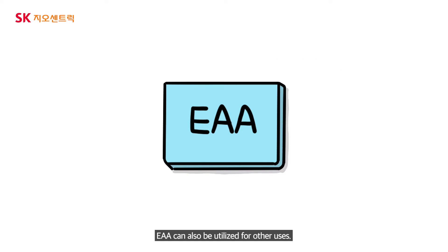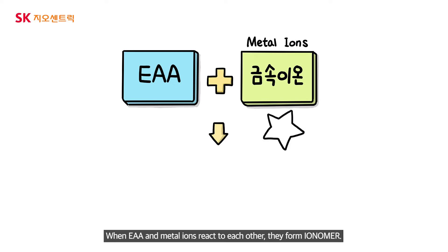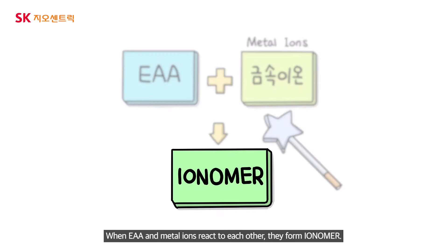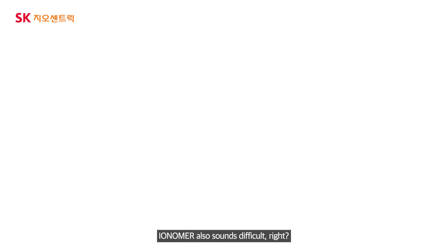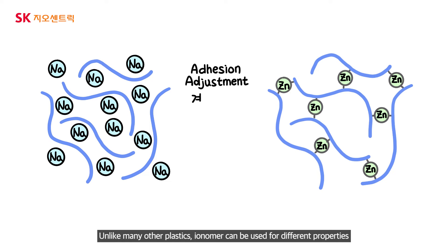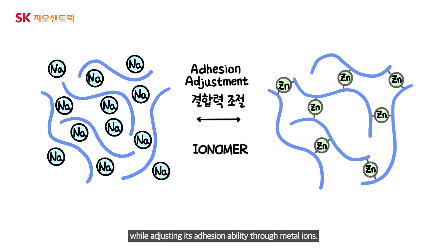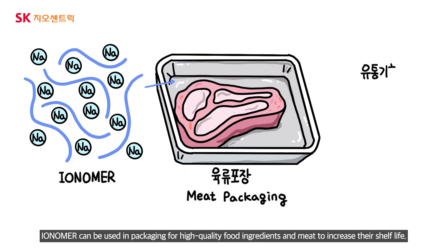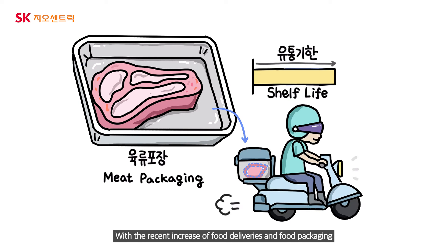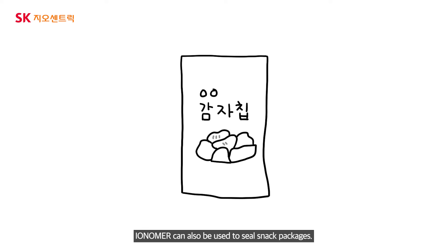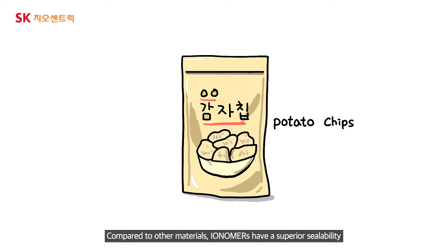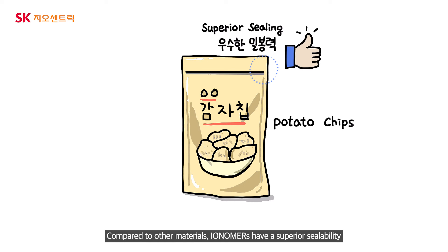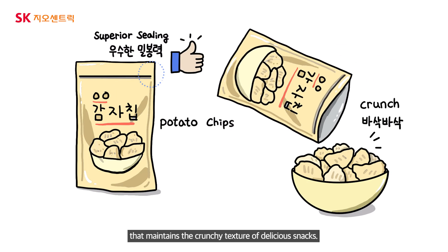EAA can also be utilized for other uses. When EAA and metal ions react with each other, they form ionomer. Unlike many other plastics, ionomer can be used for different properties while adjusting its adhesion ability through metal ions. Ionomer can be used in packaging for high-quality food ingredients and meat to increase shelf life. With the recent increase in food deliveries and food packaging, ionomer has been receiving a lot of recognition. Ionomer can also be used to seal snack packages — ionomers have a superior sealability that maintains the crunchy texture of delicious snacks.